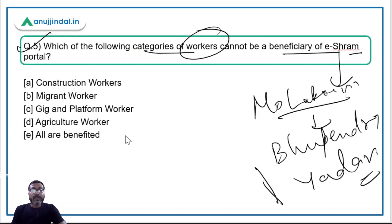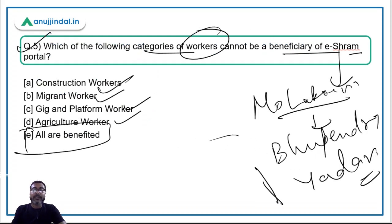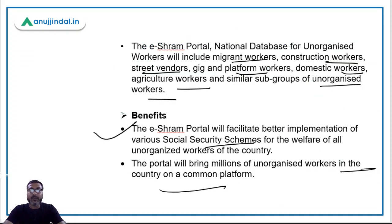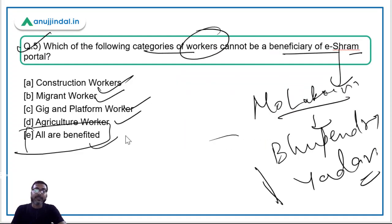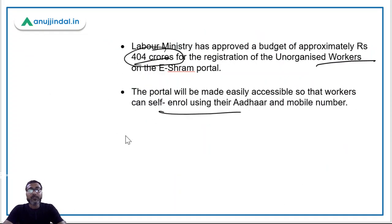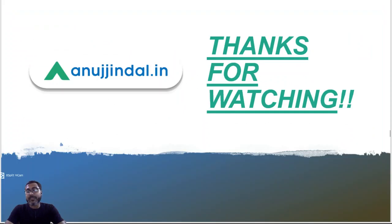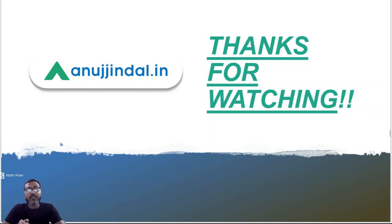The correct answer is that all are beneficiaries — construction workers, migrant workers, gig and platform workers, agricultural workers are all included — so option E is the correct answer. That's it for today's session. I hope all the questions are clear. If you have any doubts, you can ask in the comment section. Thank you so much for watching. Goodbye, take care, and God bless.